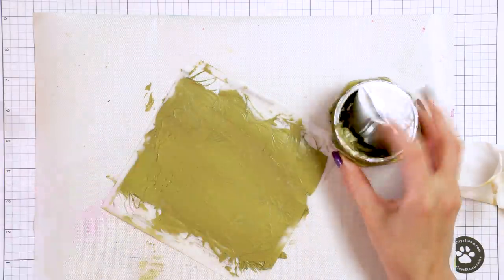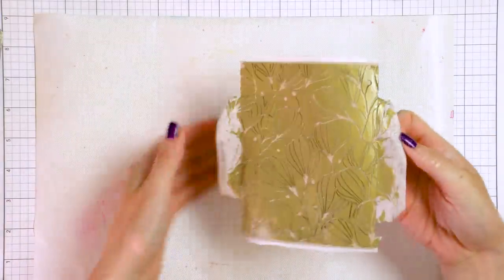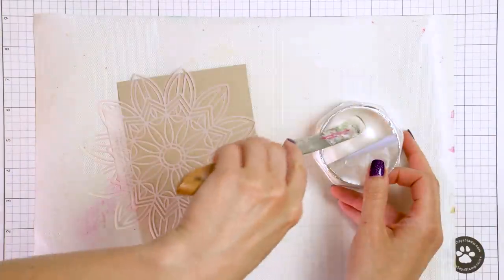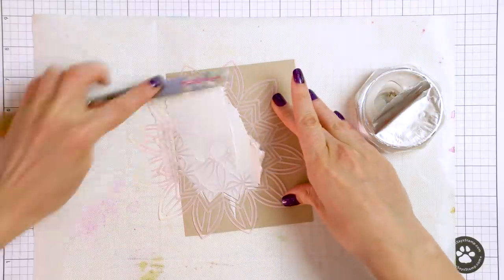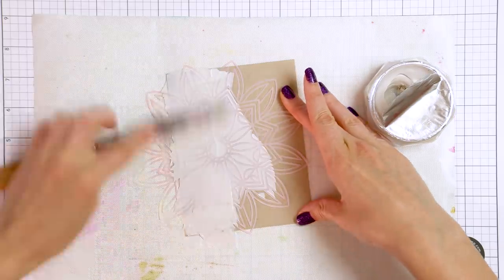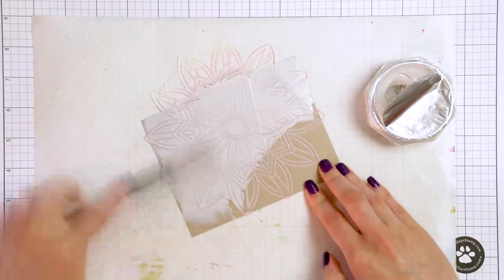Here's what this background looks like with the stencil removed. Very pretty I think. For the next background, I used Russian white mousse and Simon Says Stamp solar burst stencil. Again I repeated all of the steps and applied the mousse generously onto the background.